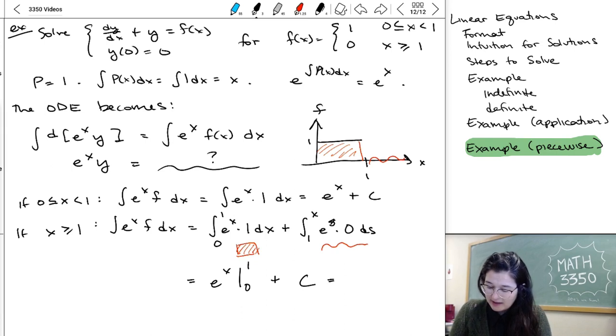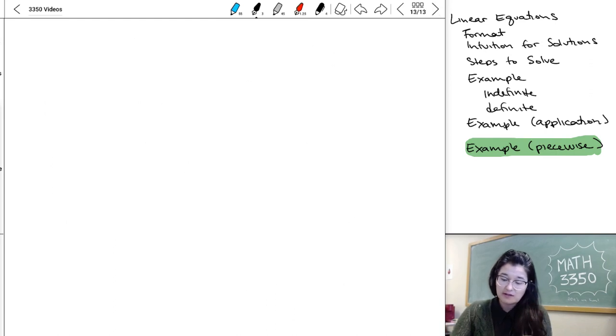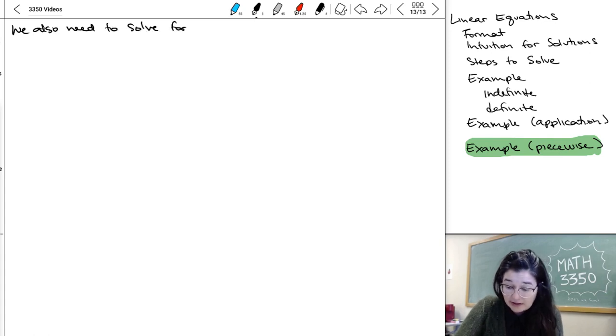And so what I end up getting is that this is e to 1 minus e to 0 plus some unknown constant. Oh, and I'm sorry, I used c for the previous part, so let's use k here. So, at this point, I've integrated both parts of the piecewise equation. And then, we also need to solve for initial conditions.